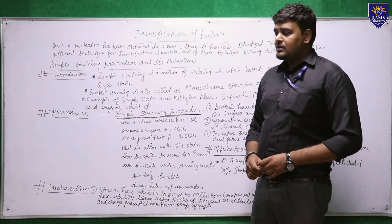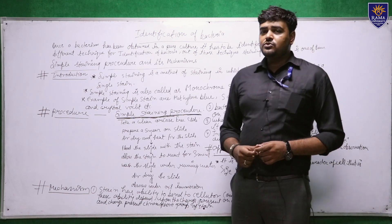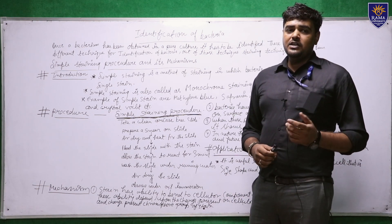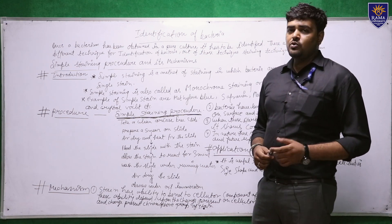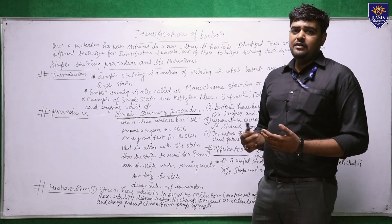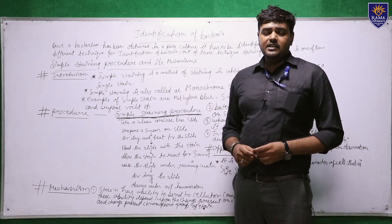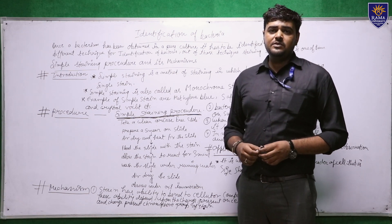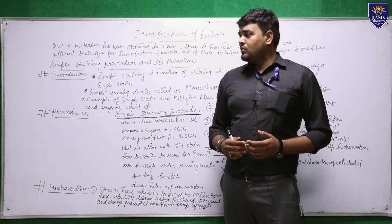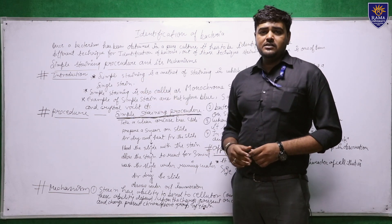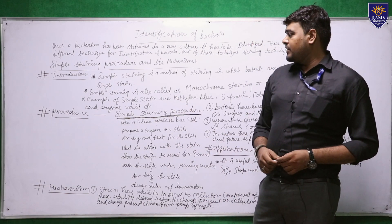Simple staining is a method in which bacteria are stained using a single stain. The simple staining technique is also called monochrome staining or positive staining, because it is used to identify whether bacteria are present or not. Examples of stains used in simple staining include methylene blue, safranin, malachite green, and crystal violet.